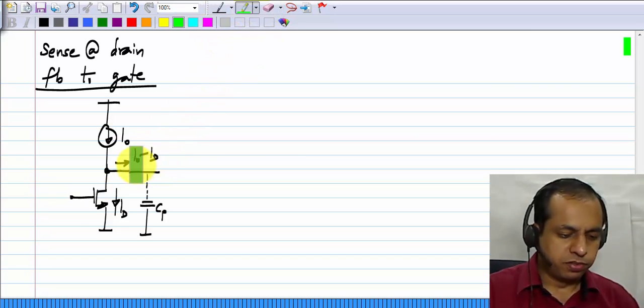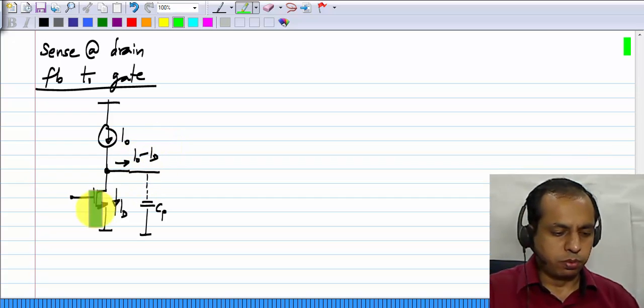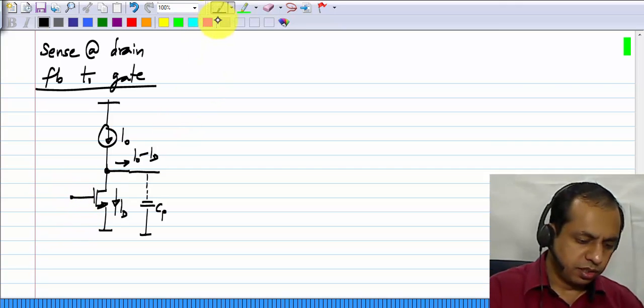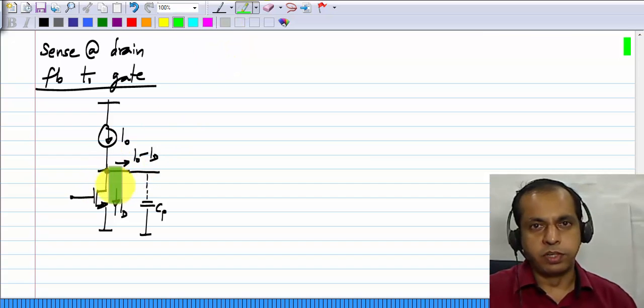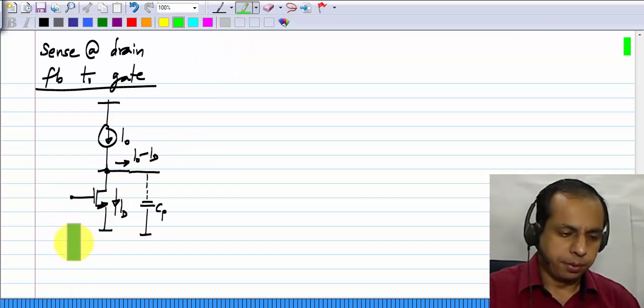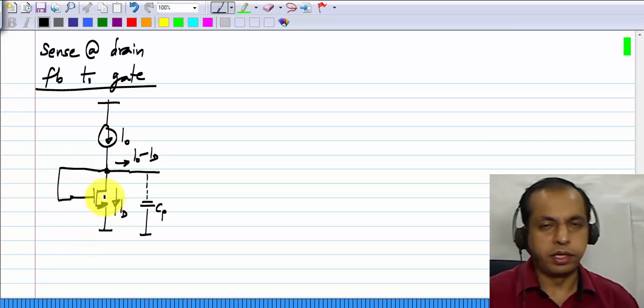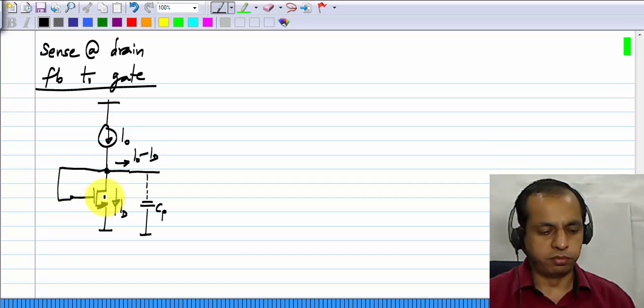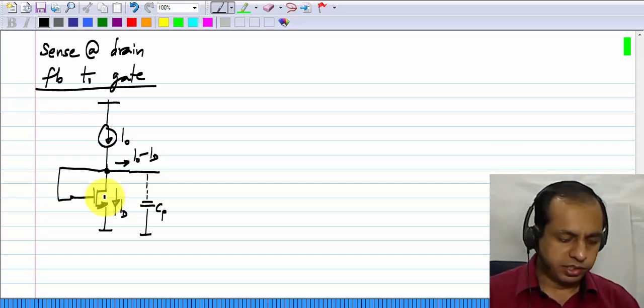If I naught is more than ID, this voltage tends to increase. To increase ID, we want the gate voltage to increase. In general, the drain voltage is varying in the same sense that we want the gate voltage to vary. So we can connect the drain to the gate and complete the feedback network. This will in steady state ensure that ID equals I naught.